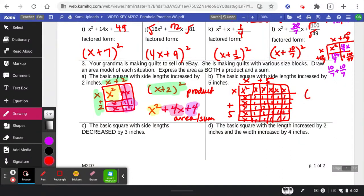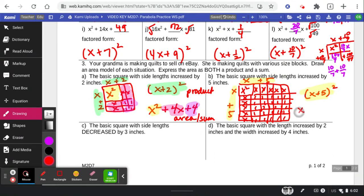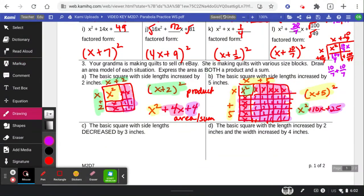So my product is x plus 5 squared. That comes from these factors on the outside. And then my sum is x squared plus 10x plus 25. And here's where all those different parts come from. And this is known as the sum. And this is known as the product.